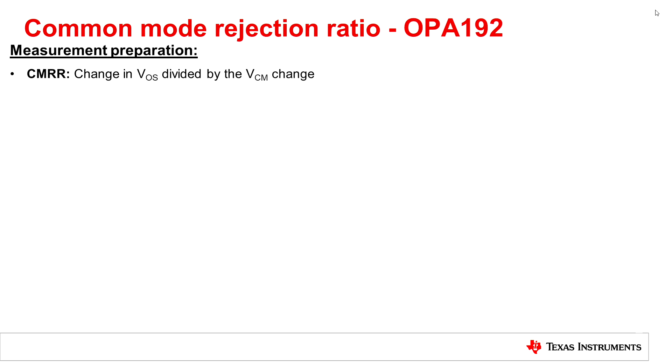Before we measure CMRR of a linear amplifier, let's define common mode rejection ratio. Common mode rejection ratio is defined as the change in offset voltage divided by the change in common mode. It's important to review a TI datasheet and its test conditions prior to analyzing any parameter. This includes evaluating CMRR.